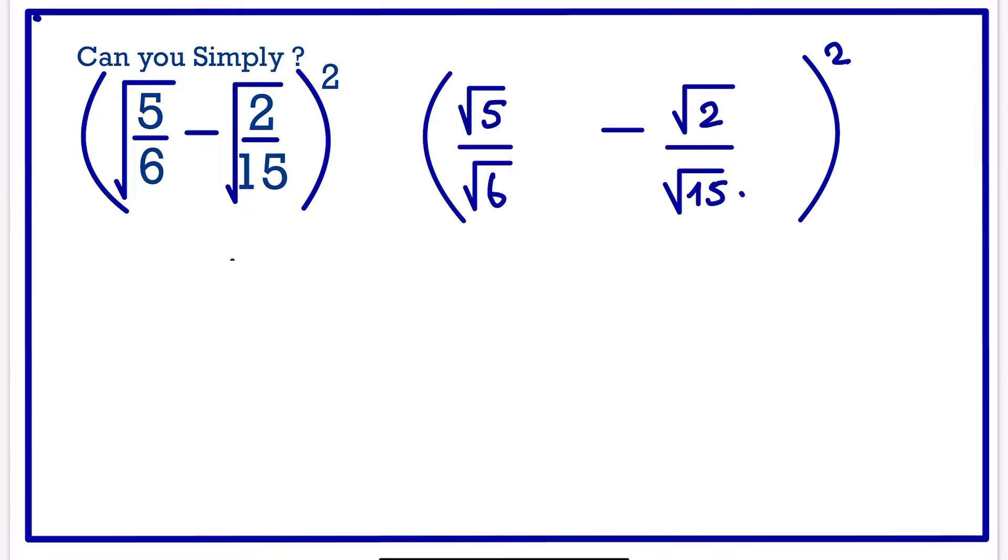The next step is to make sure that whenever we simplify fractions, we want to make sure that they have the same denominator when we subtract or when we add. The LCM of 6 and 15 is 30.